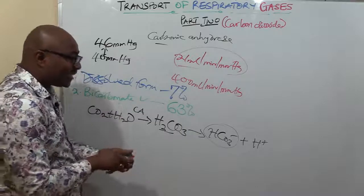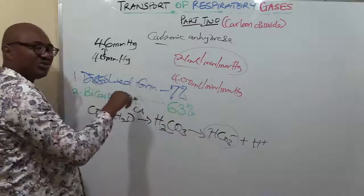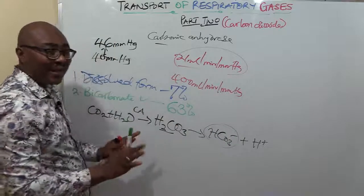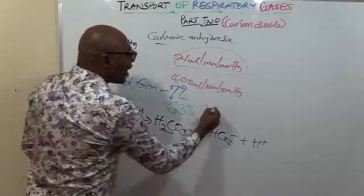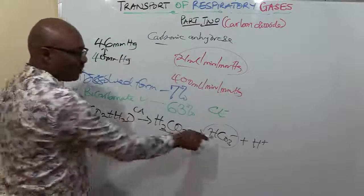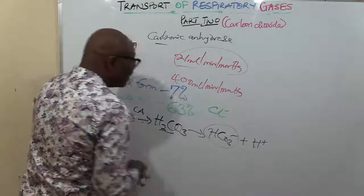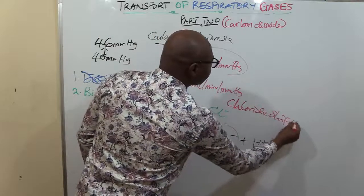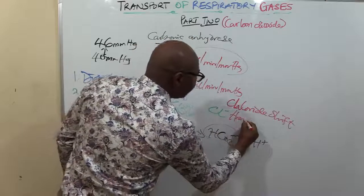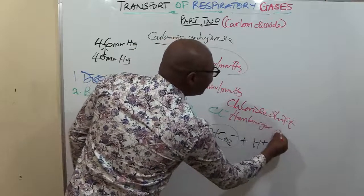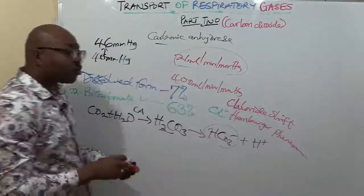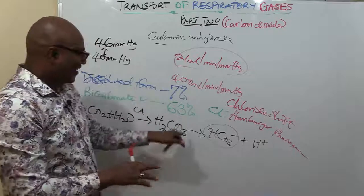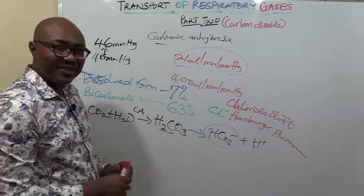It's converted to bicarbonate in the red blood cells and then diffuses out into the blood. As bicarbonate is going out of the red blood cells, in order to replace this electrolyte and maintain electronegativity, chloride ions will go into the red blood cells to replace it. That phenomenon is known as chloride shift, also known as the Hamburger phenomenon.